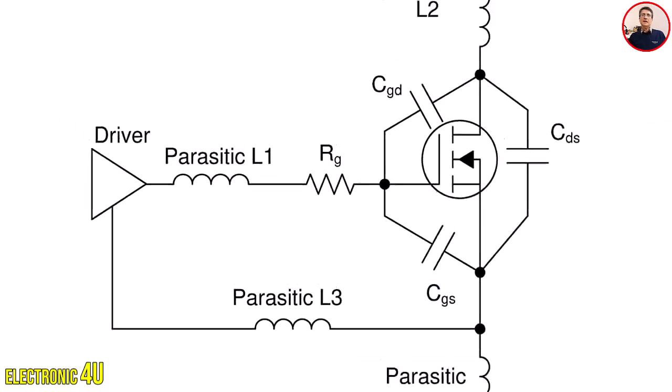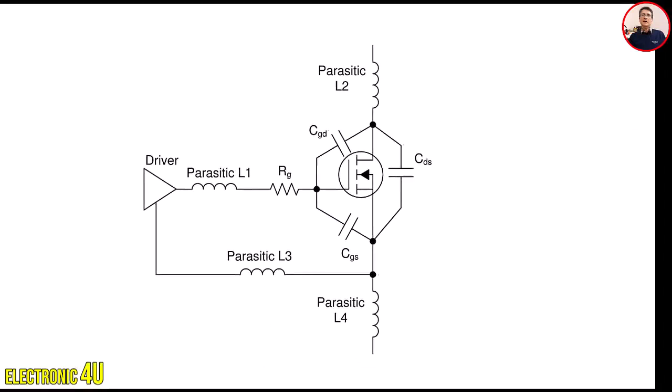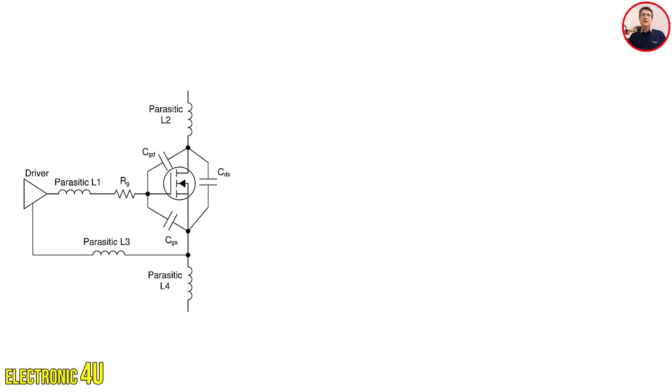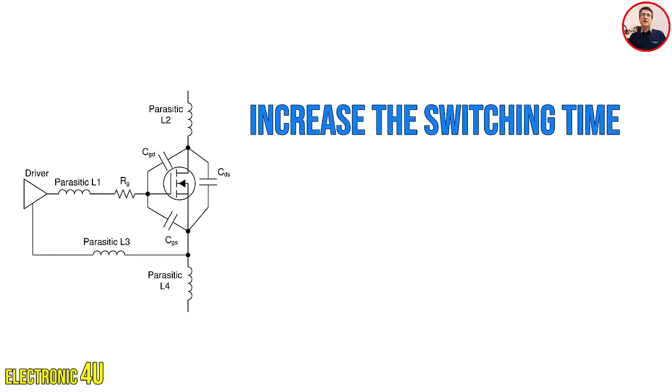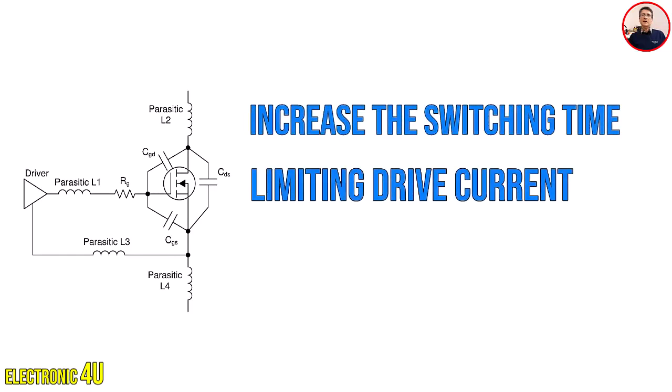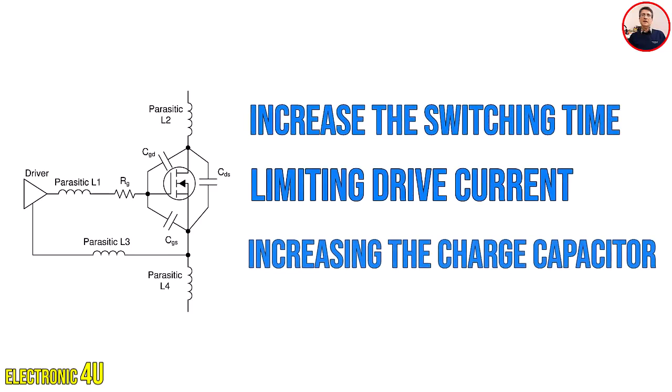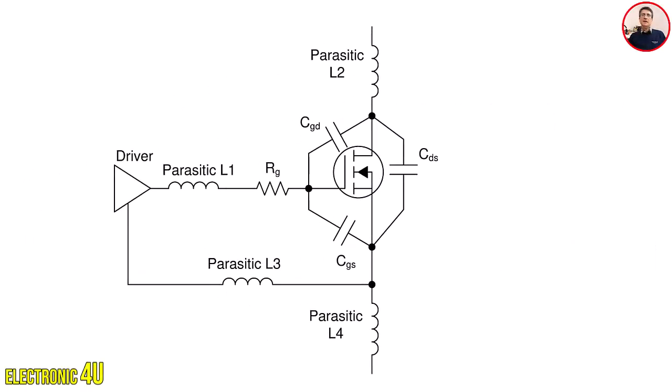While both of these options can be effective in reducing ringing, there is a trade-off as they both increase the switching time of the FET, limiting drive current in the case of the gate resistor, or increasing the charge needed to turn on the FET in the case of the capacitor. Since switching time is increased, the switching losses also increase, reducing efficiency. This reduction of efficiency emphasizes the need for a way to damp these oscillations without significantly affecting the switching speed and efficiency of the gate drive circuit.